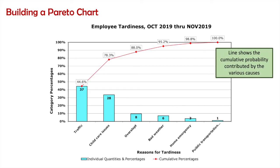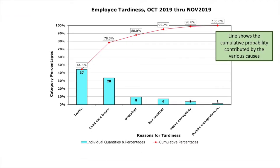Analyzing the data, we can see that nearly 80% of all reasons for employee tardiness are due to traffic and childcare issues. If these two issues could be addressed, it would impact 80% of all tardiness for the department store.